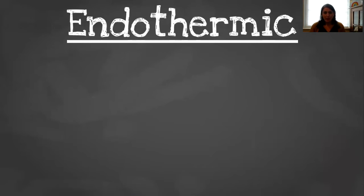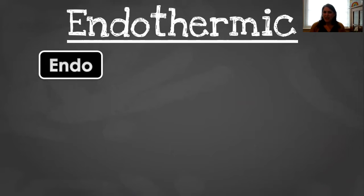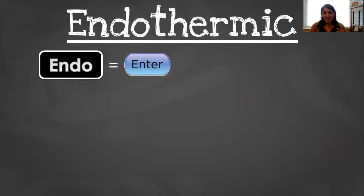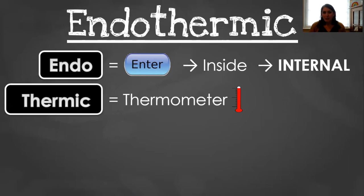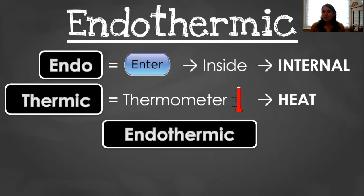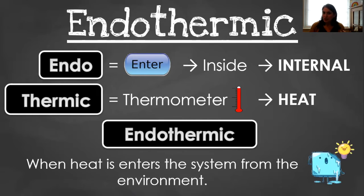The next word is endothermic. So if exo meant exit, what do you think endo means? Did you think enter? That means you're smart, because you're right. Endo means inside — the scientific word for that is internal. Again, thermic means heat. So endothermic is internal heat, or when heat enters the system from the environment.